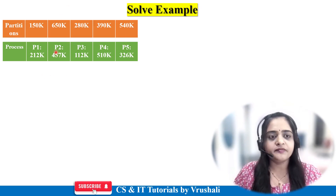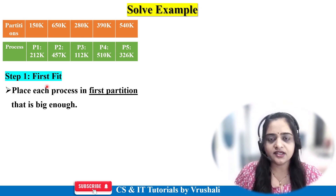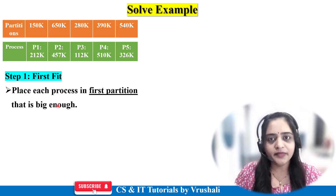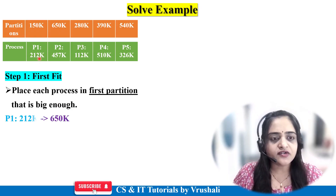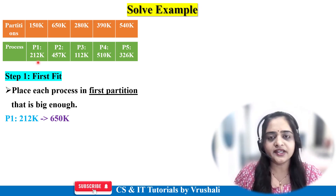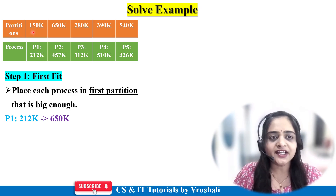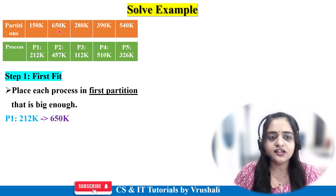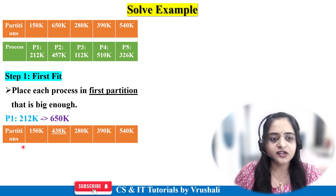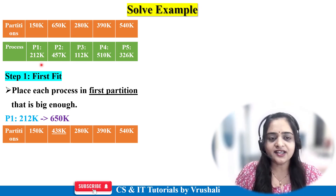First step: apply the first fit algorithm — find the first partition that is big enough. Process P1 requires 212KB. The OS checks from the start: 150KB is not enough, so move to the next: 650KB, which is sufficient. P1 is executed there. From 650KB, 212KB is used, leaving 438KB remaining.